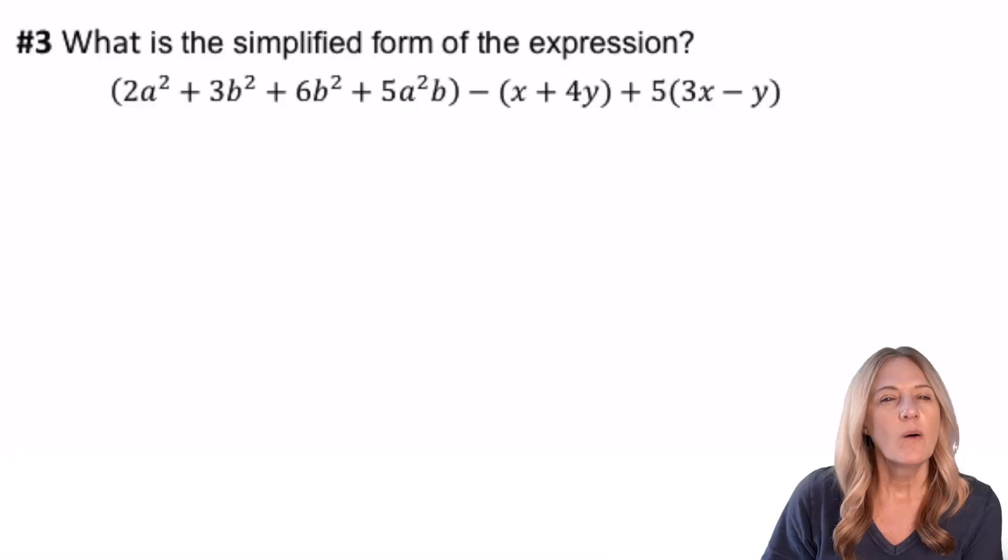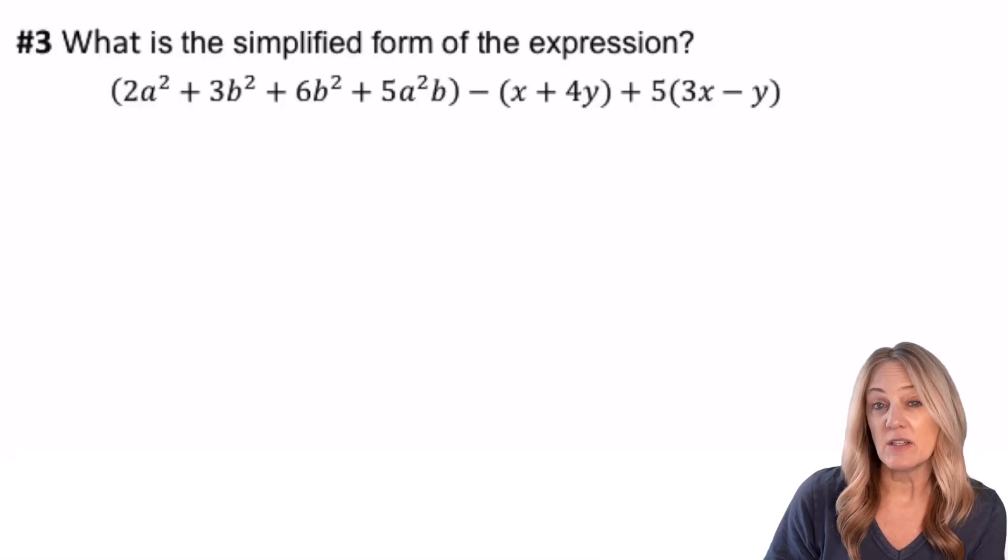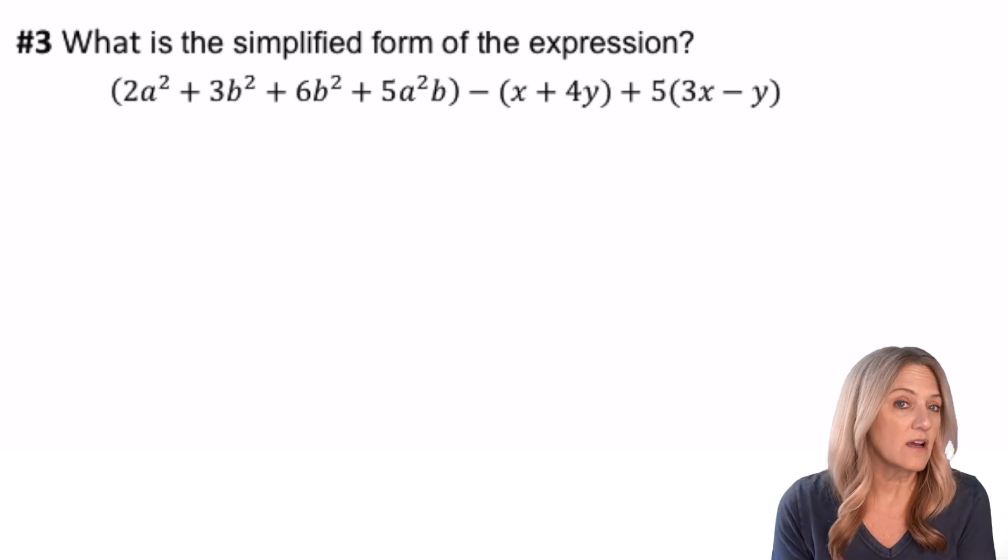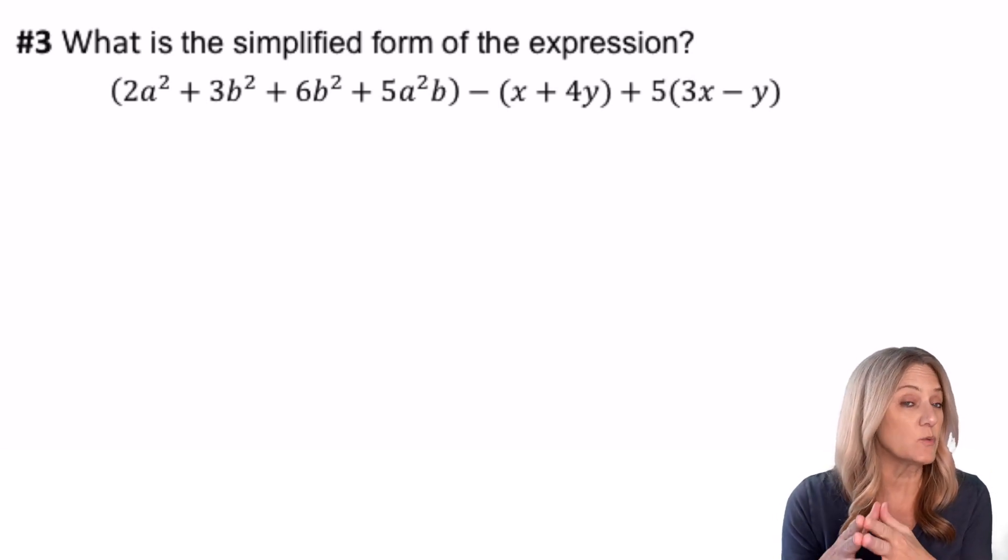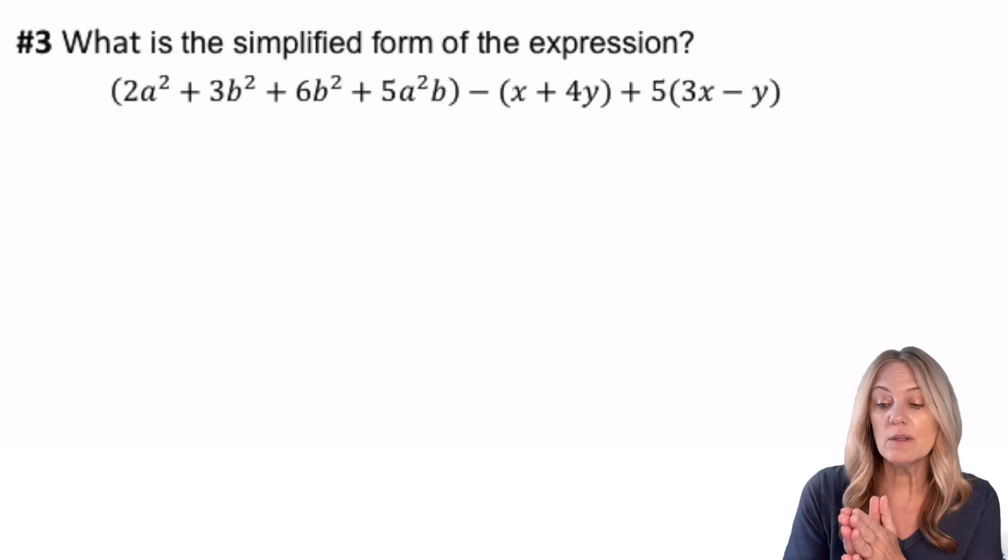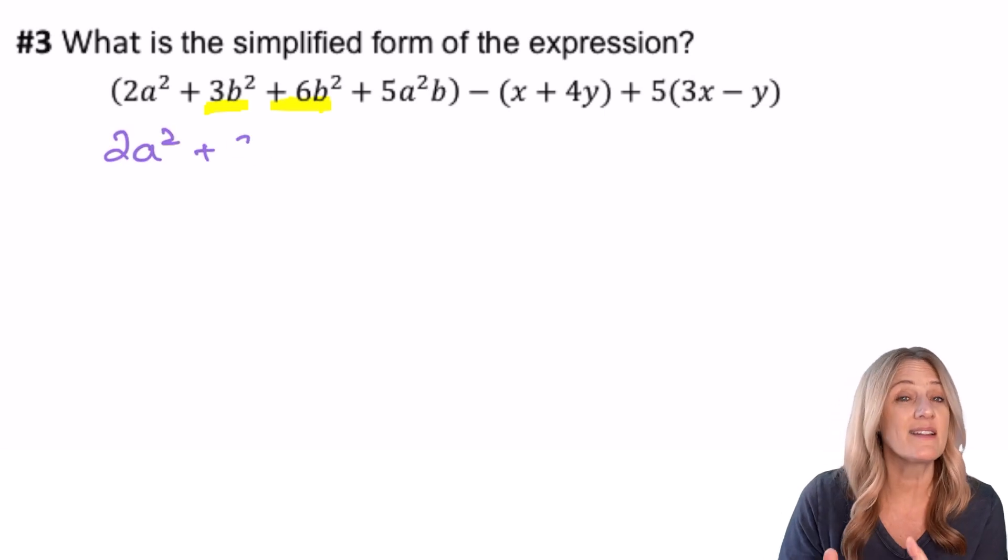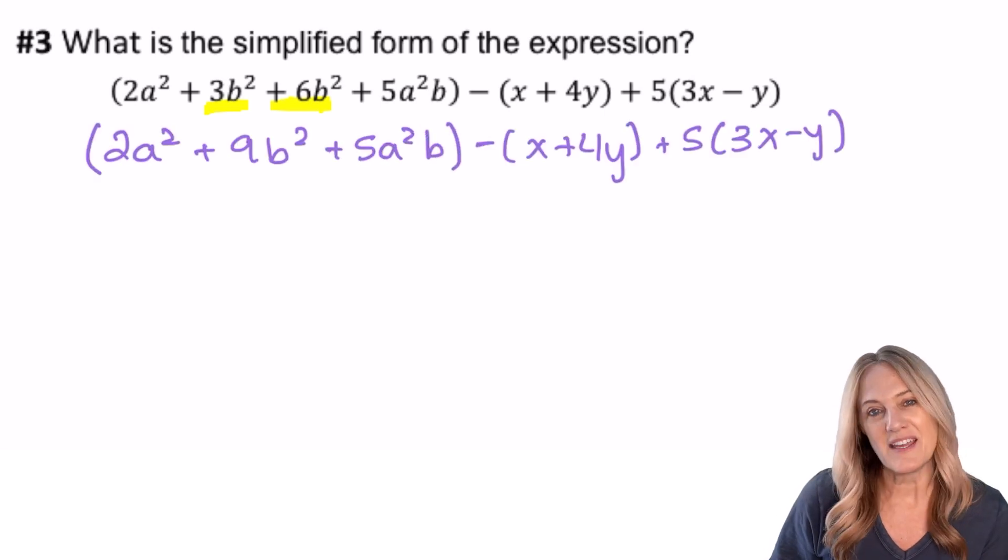What's the simplified form of the expression? Let's look at the first set of parentheses. We have a's and b's. Are any of them the same variables raised to the same powers? Well, it looks like 3b² plus 6b² are like terms, so let's go ahead and simplify that.